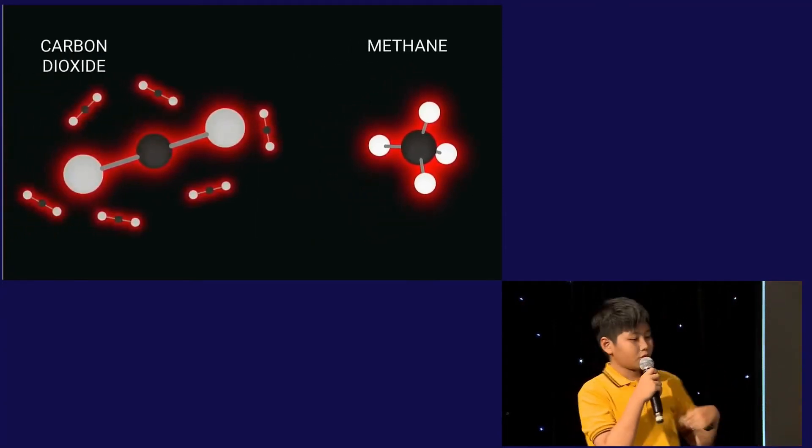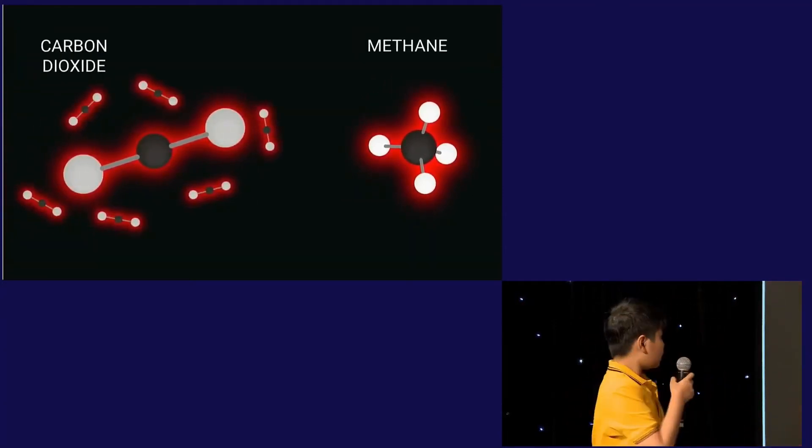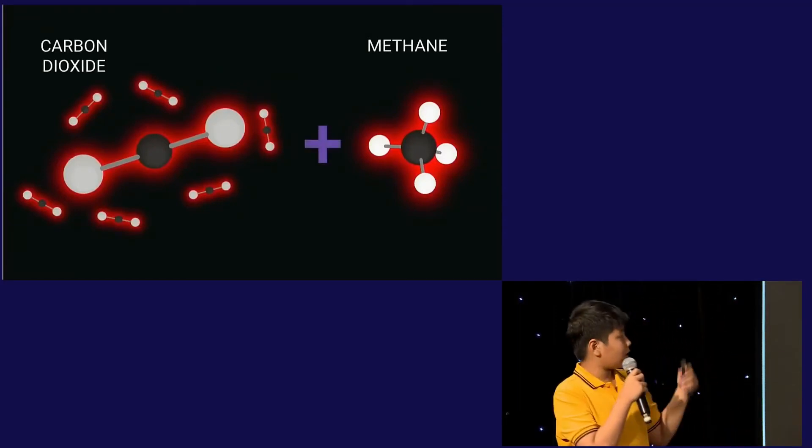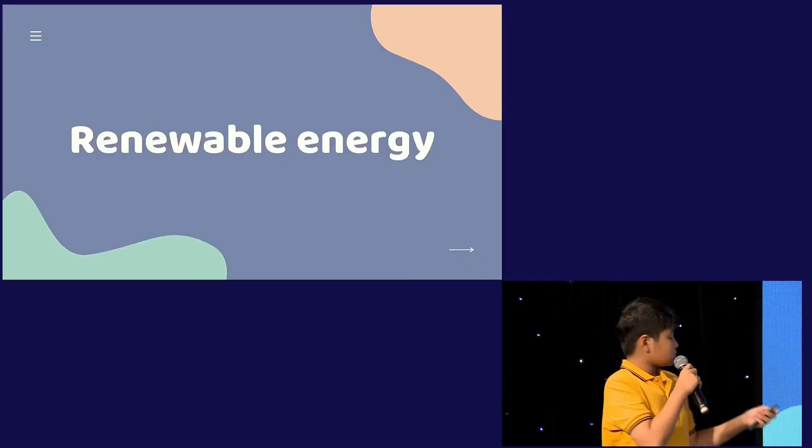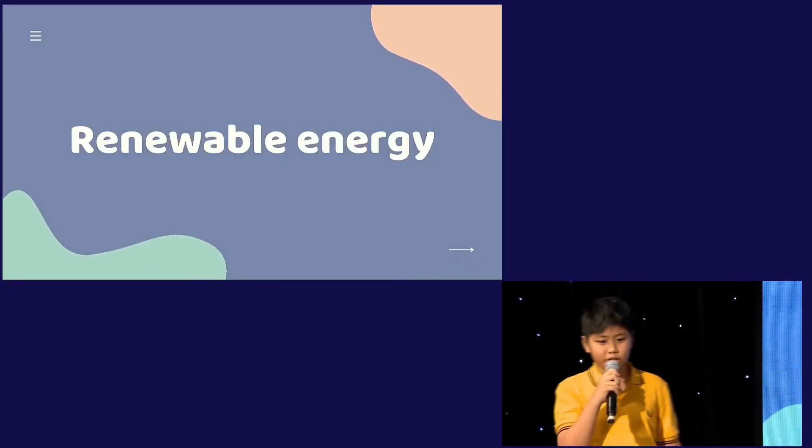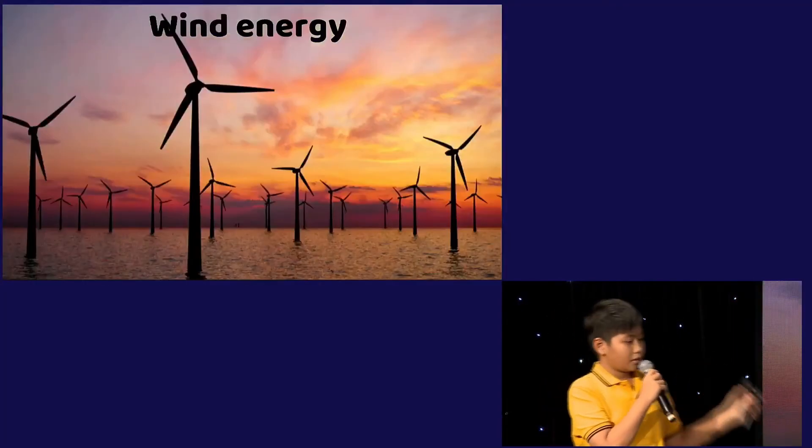Reducing methane is a solution in the near term. And cutting carbon dioxide is a solution in the long term. And we have to do both. In the future, the way to achieve net zero is by using renewable energy. Such as solar, wind, and nuclear.